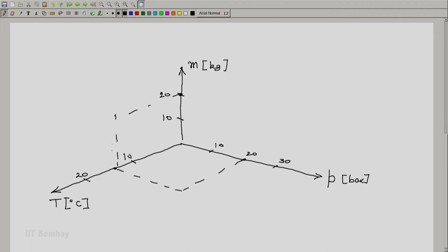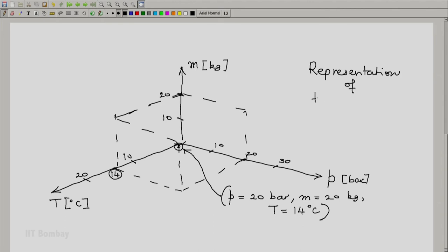Create a rectangular parallelepiped. So we will have our temperature point somewhere here. This point represents pressure of 20 bar, mass of 20 kg, temperature of 14 degrees C. And this will be a representation of the state of our system.